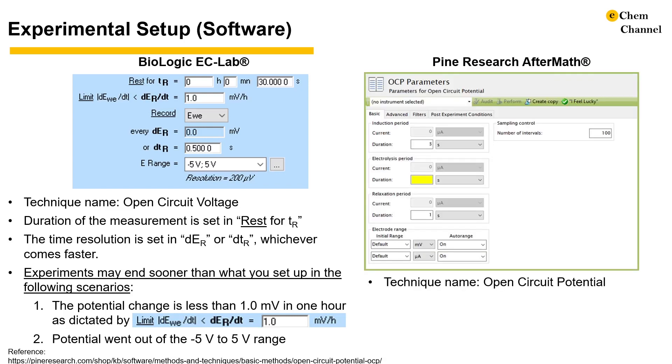In other potentiostat software, the setup will be similar but likely with different terminologies. For example, in Pine Research's AfterMath software, the duration of measurement is set in the electrolysis period, and the number of intervals controls the time resolution according to this equation.